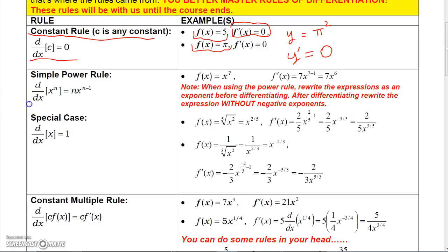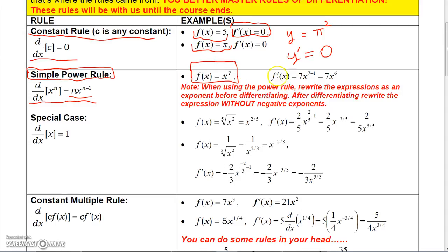The power rule says that if we want to take the derivative of x to a power, that's going to equal the power times x raised to the power one less than what it started. So x to the n is n times x to the n minus one. This is called the simple power rule. A simple example: if we had f(x) = x to the seventh, you bring the power down — seven — and reduce the power by one to get seven x to the sixth.